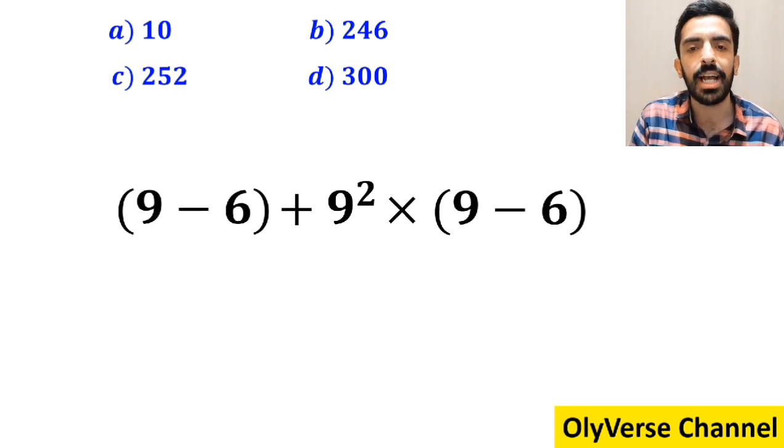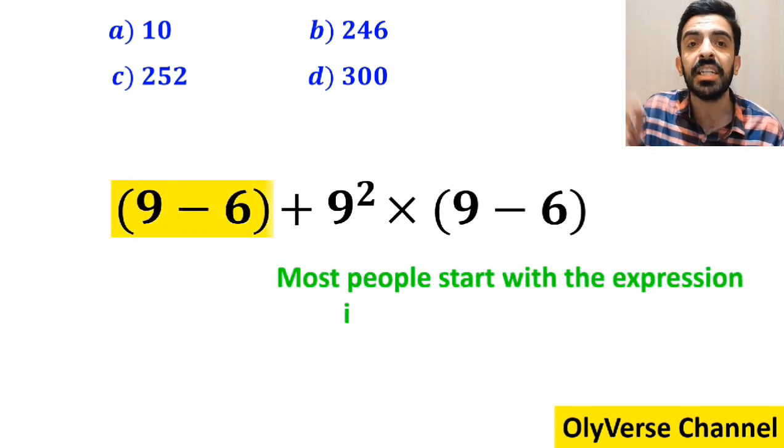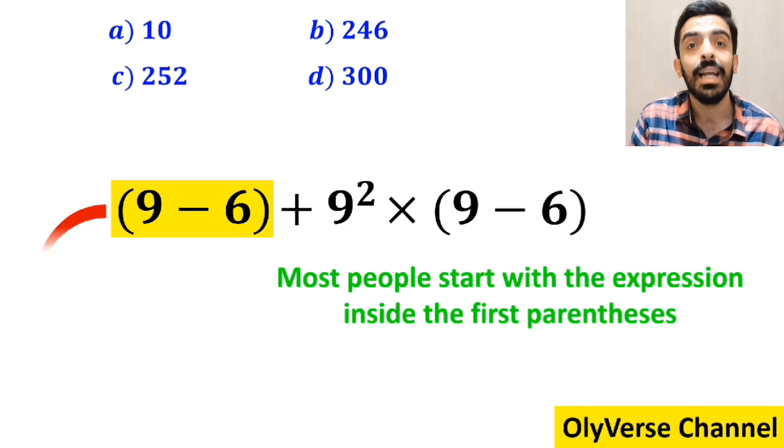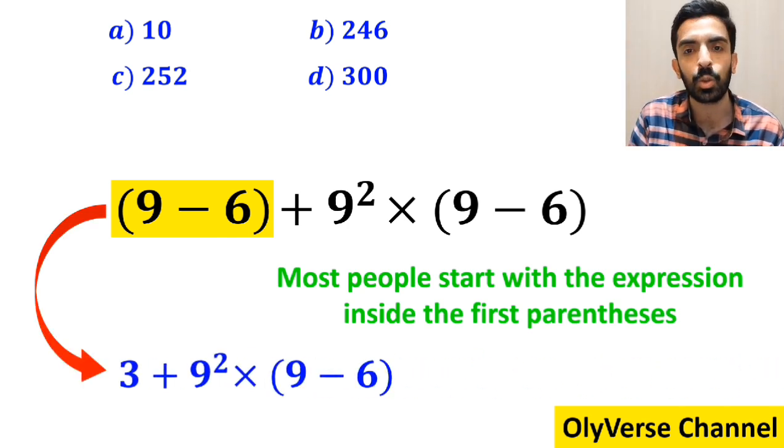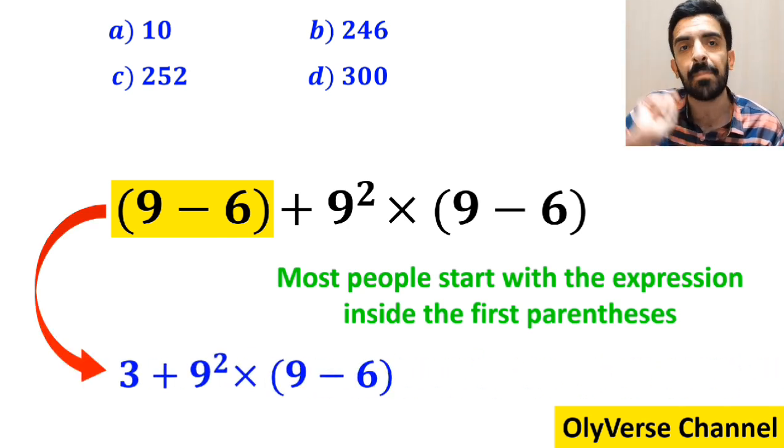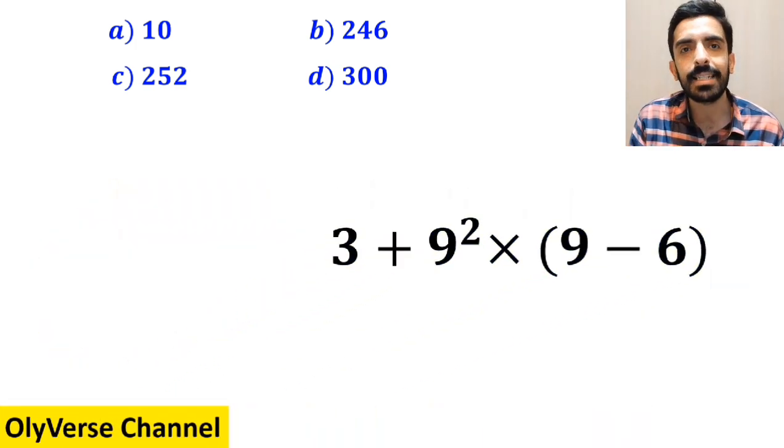In the first step to solve this question, most people start with the expression inside the first parenthesis and simplify this expression to 3 + 9² × (9 - 6).